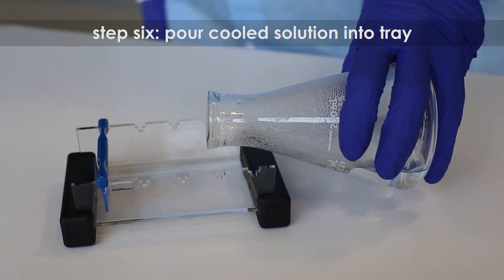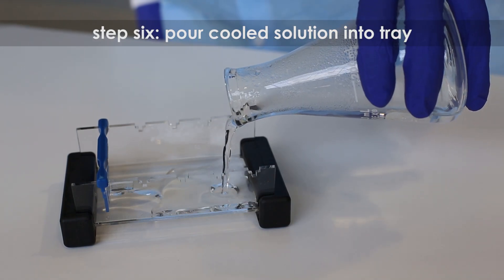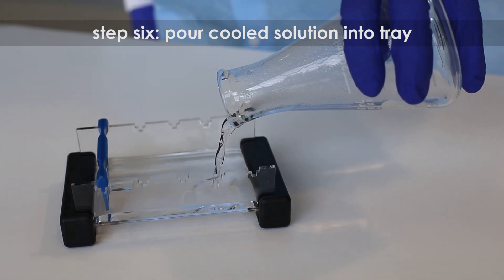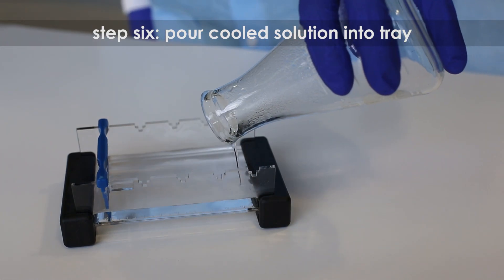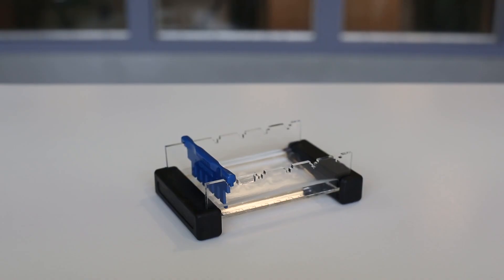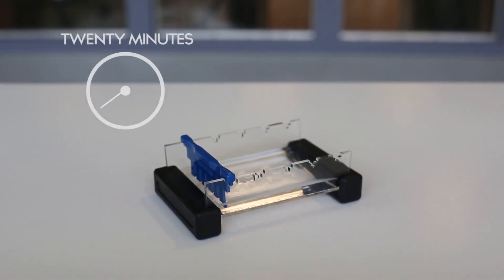Step 6. Pour the cooled Agarose solution into the prepared gel casting tray. The gel should solidify within 20 minutes. The gel will stiffen and become less transparent as it solidifies.